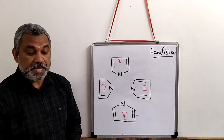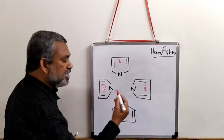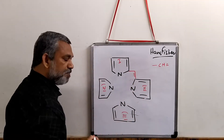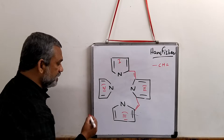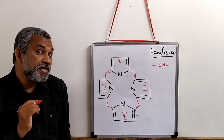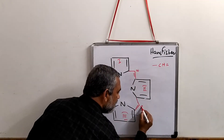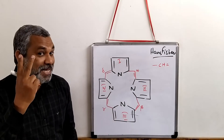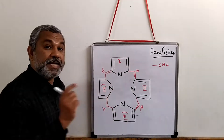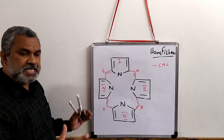The second rule is that the pyrrole rings are connected by methenyl bridges. Each methenyl bridge is also numbered using Greek letters: alpha, beta, gamma, and delta. So the first rule uses Roman numerals to label the ring structures, and the second rule uses Greek letters to label the methenyl bridges. This is the basic structure of the porphyrin ring.